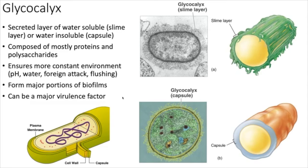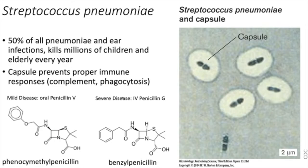Sex pili are used to exchange genetic material between bacteria. This is an E. coli extending its sex pilus to another E. coli — we call this conjugation, where one bacterium acts as the 'male' and donates genetic material, often plasmids, to the 'female.' This can transmit things like antibiotic resistance, giving the species an advantage as a whole.